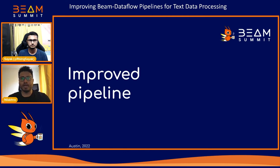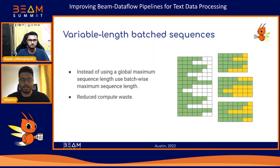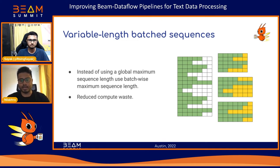Hi everyone, I'm Neil. I work at Carton as an NLP engineer and it's a pleasure to be here. Continuing from where Sayak left off, let's take a look at the batches after applying the changes he talked about. If you look at the image on the right, you will see 40 white squares — each representing a padding token. Instead of using a global maximum sequence length of 512 tokens, if we take the maximum sequence length per batch, we can reduce padding from 41 tokens down to 36.